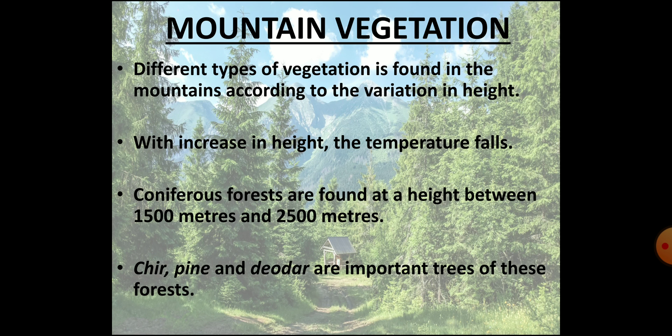The fourth type of vegetation is mountain forests. They consist of different types of vegetation depending on the altitude — as altitude increases, temperature goes down. In the high reaches between 1500 meters and 2500 meters, we find coniferous forests, with trees conical in shape. Important trees found in these forests include Chir, Pine, Silver Fir, Deodar and Spruces.